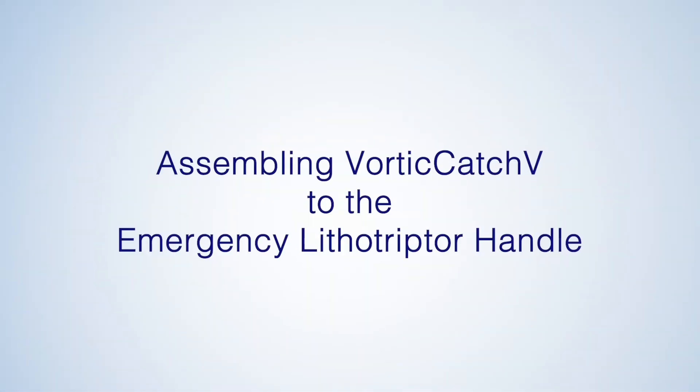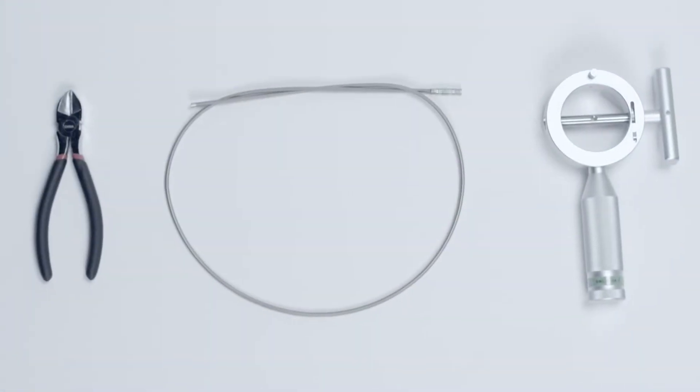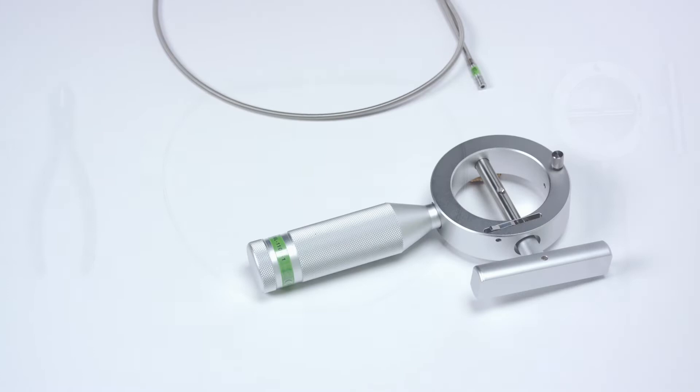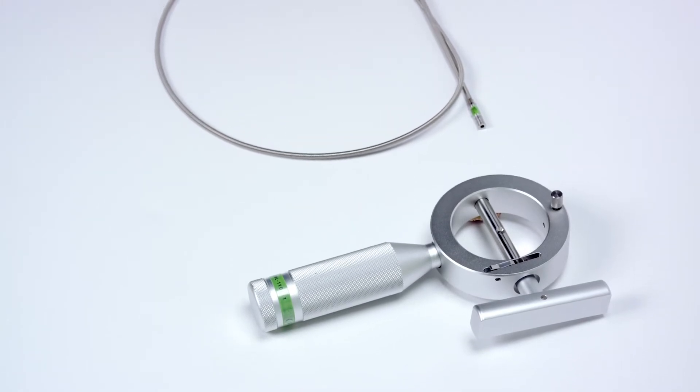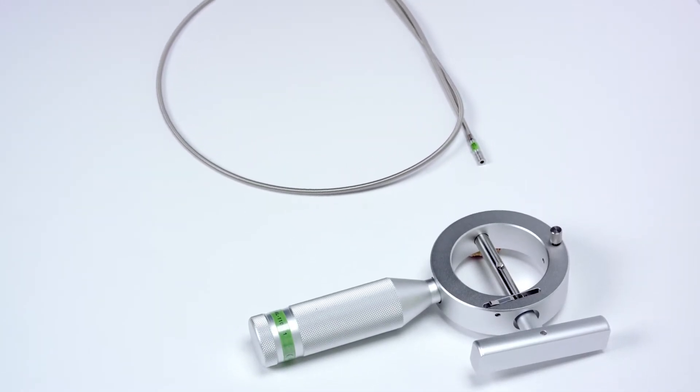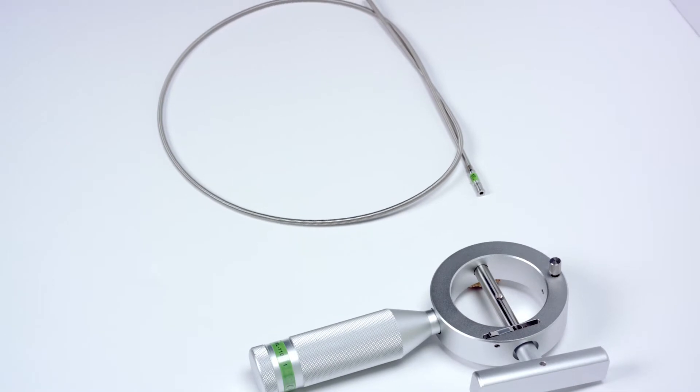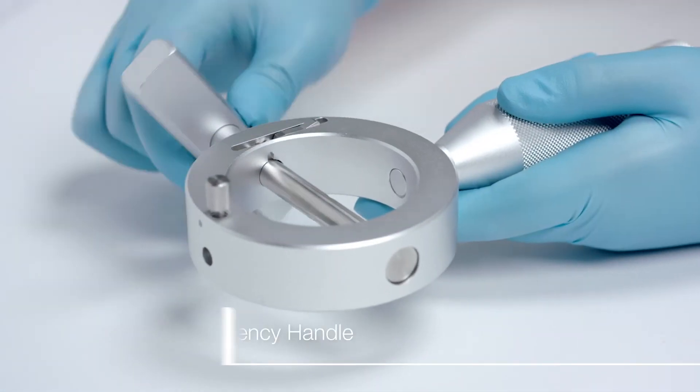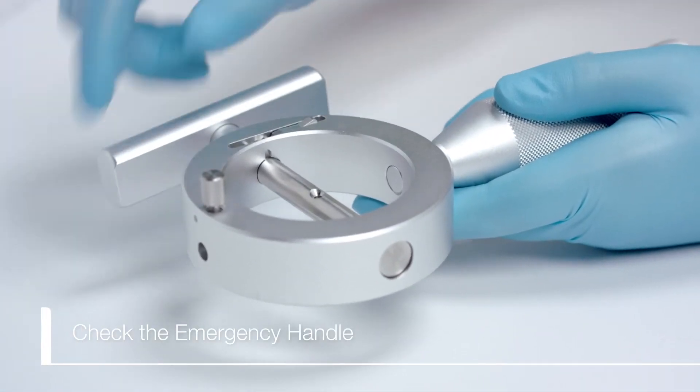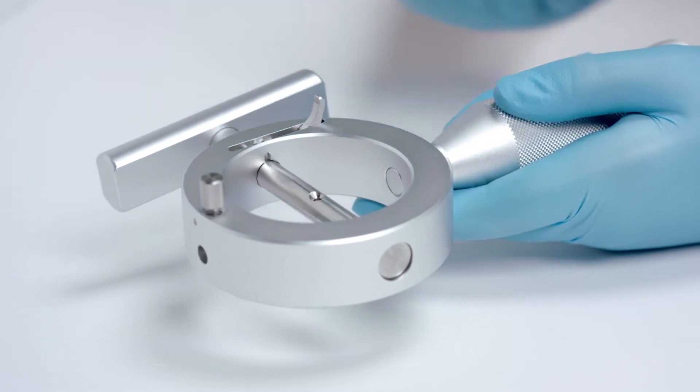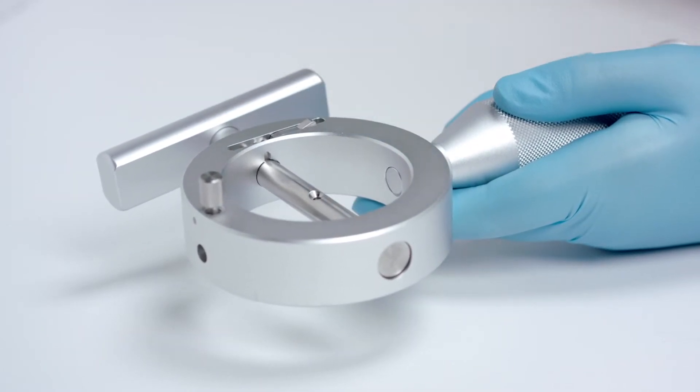In the event that the Lithocrush V Handle is unavailable, or Lithotripsy using the Lithocrush V Handle fails, then an emergency Lithotripsy handle may be used to complete emergency Lithotripsy. Before using the emergency Lithotripsy handle, ensure that the rotatable bar can freely turn and confirm the ratchet lock works by engaging and disengaging it at the handlebar.